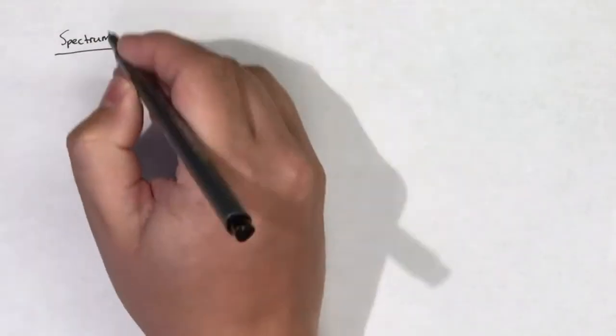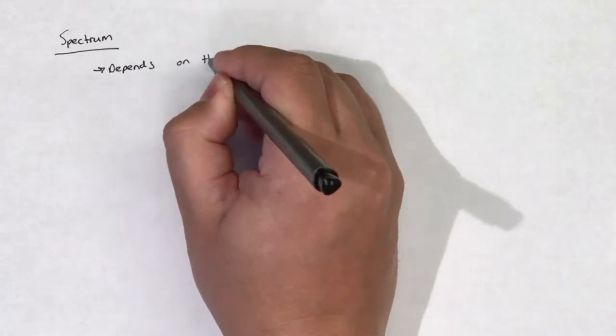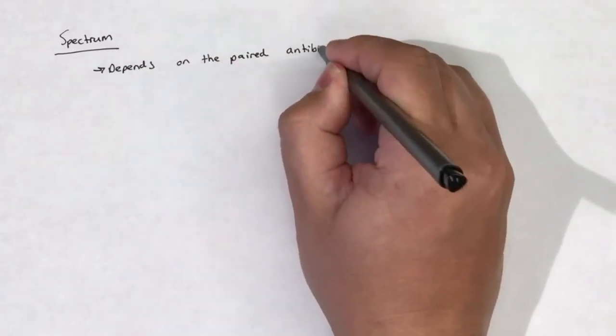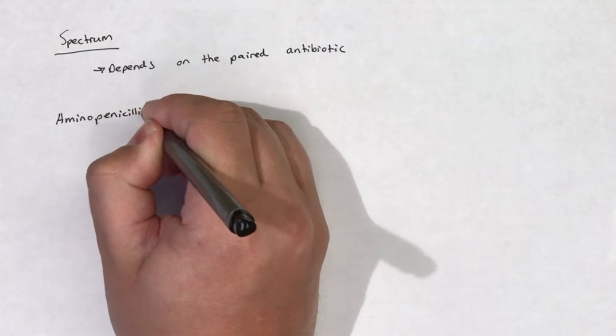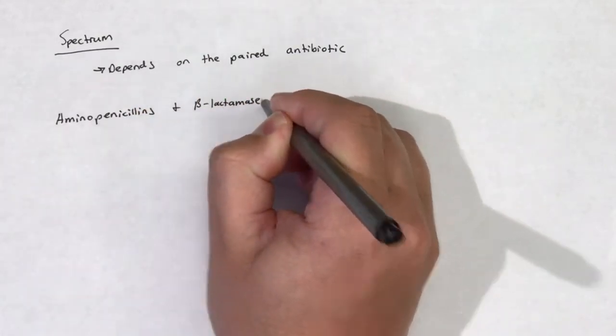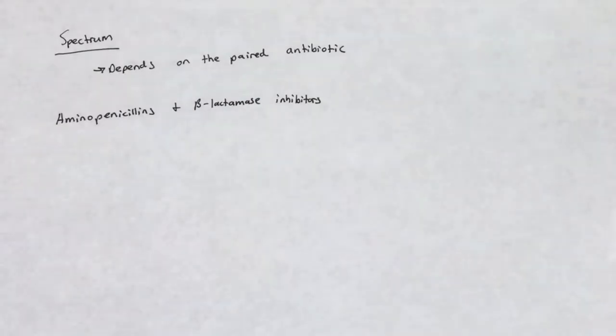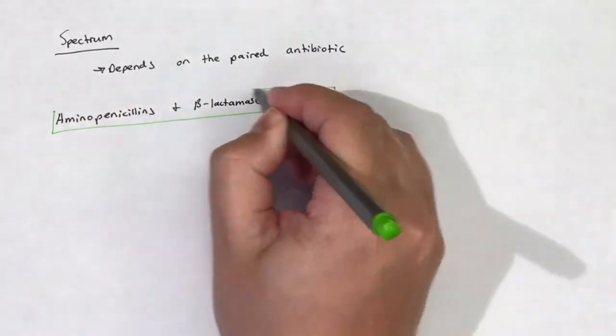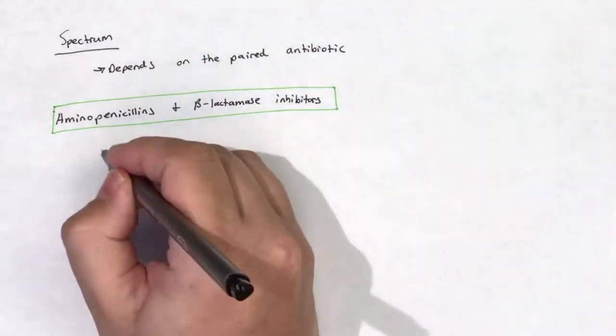The spectrum of coverage of a beta-lactamase inhibitor is mainly dependent on the paired antibiotic. Beta-lactamase inhibitors are typically co-formulated with the beta-lactam antibiotic in an effort to extend the spectrum of the beta-lactam antibiotic into the beta-lactamase-producing bacterial species.